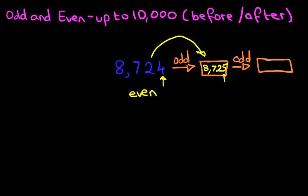What about the number after this? Well, if this is an odd number, we simply count in 2's. So counting forward by 2, we've got 8,725; the number after that is 8,726, and the number after that is 8,727. That is an odd number. And therefore, we have found the two odd numbers after 8,724.